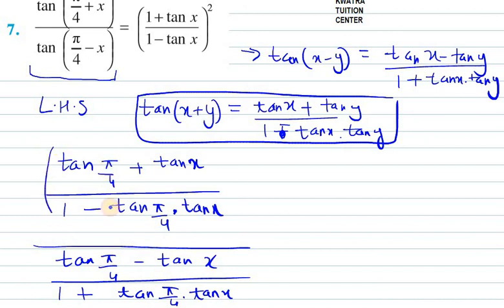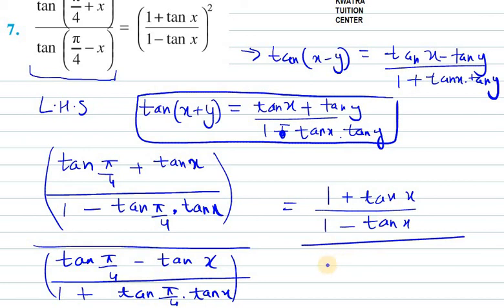It equals 1. So therefore it will be 1 plus tan x over 1 minus tan x, over 1 minus tan x over 1 plus tan x.